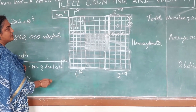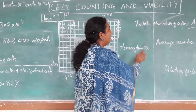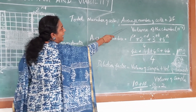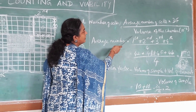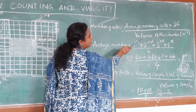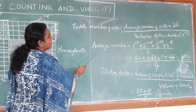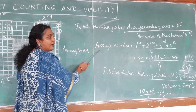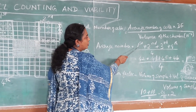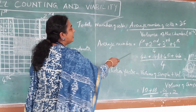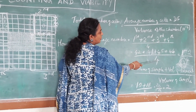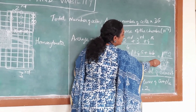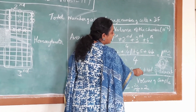After counting, we use a formula to calculate the total number of cells: average number of cells multiplied by the dilution factor, divided by the volume of the chamber which is 10 to the power of minus 4. For the average, count all four corner squares and divide by 4. We counted 172 cells total, giving an average of 43 cells.